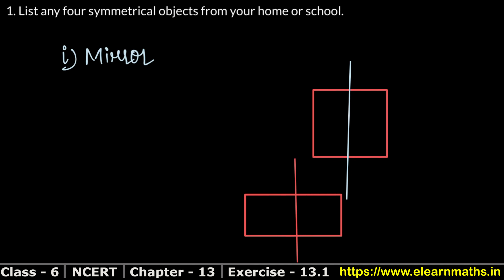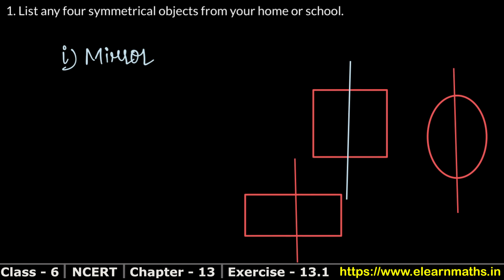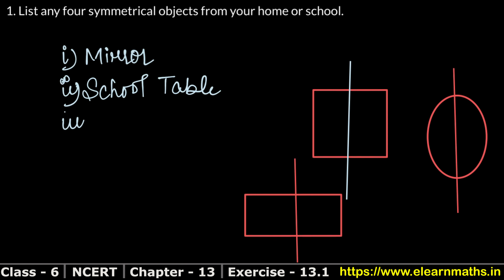If we make a circle, both sides will be symmetrical. Our second example is a school table. If we draw a line of symmetry cutting the table from the middle, both sides will be equal. Line of symmetry means both portions are identical.